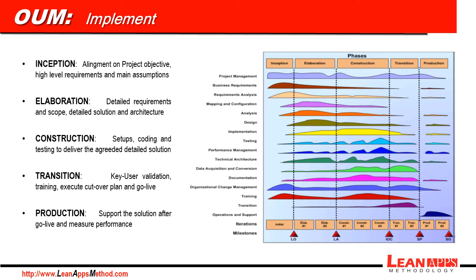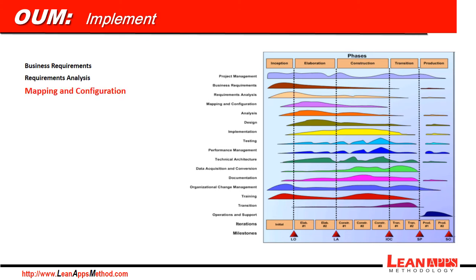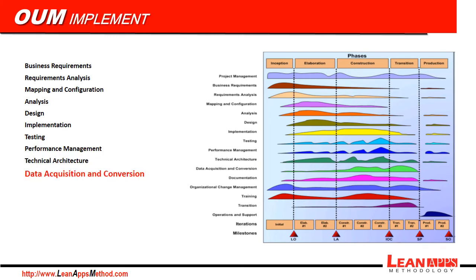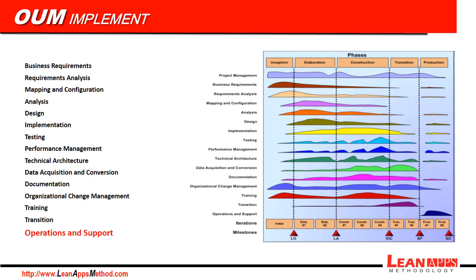The Implement area of OUM has different process groups as well: Business Requirements, Requirements Analysis, Mapping and Configuration, Analysis, Design, Implementation, Testing, Performance Management, Technical Architecture, Data Acquisition and Conversion, Documentation, Organizational Change Management, Training, Transition, and Operations and Support.